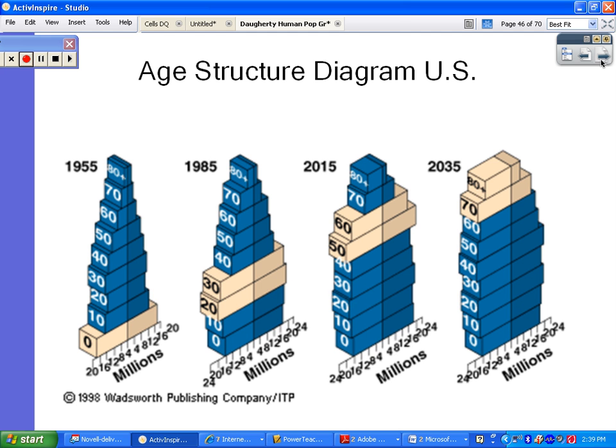This last slide shows baby boomers moving up through the age ranks throughout the years. Here they are starting off back in the 1950s, then in the 1980s they're in their 20s and 30s. Around 2015 we can see them reaching older ages, getting ready to retire. In 2035, they'll be in their 70s and 80s, and look at how the pyramid has changed — now it's more straight-sided, with a large group of elderly supported by younger people below. We'll see what happens with the baby boomers.